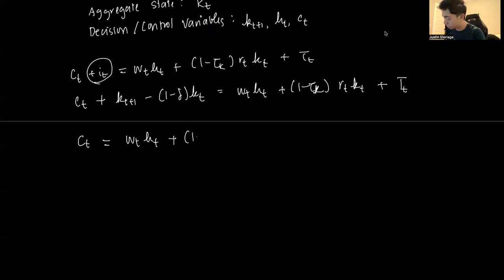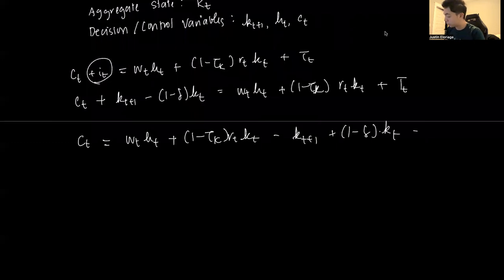And as you can see, because we have a form for Ct, we reduce the number of decision variables from 3 to 1. So we only need two first order conditions now.